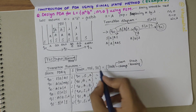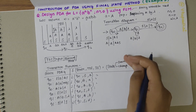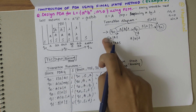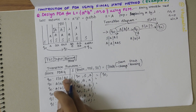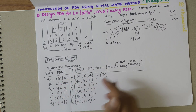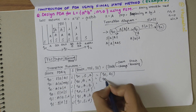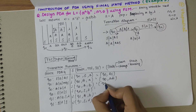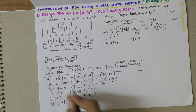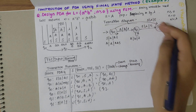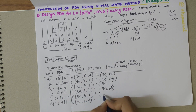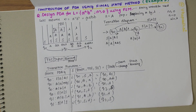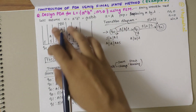Writing out the full transition functions: δ(q0, a, S) = (q0, AS); δ(q0, a, a) = (q0, aS); δ(q0, b, a) = (q1, λ); δ(q0, λ, S) = (q2, S); δ(q1, b, a) = (q1, λ); δ(q1, λ, S) = (q2, S). These are the complete transition functions for the given language.